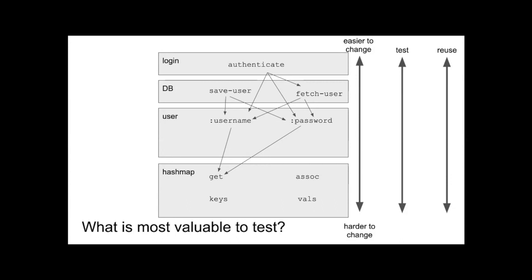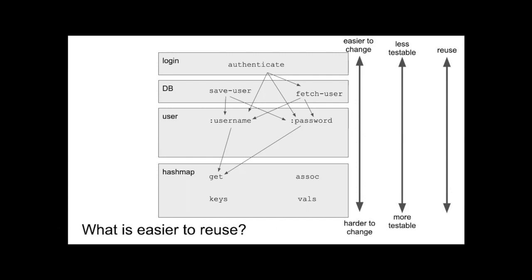On the other hand, if you change something at the bottom — say you redefine assoc to do something different — all the code above it that points to assoc is now going to break. Even if you try to change it to maintain behavior, you might make a mistake. So it's harder to change. What is more valuable to test? I'll argue that stuff at the bottom is more valuable to test — it changes less often because it's harder to change, so the tests will last longer.